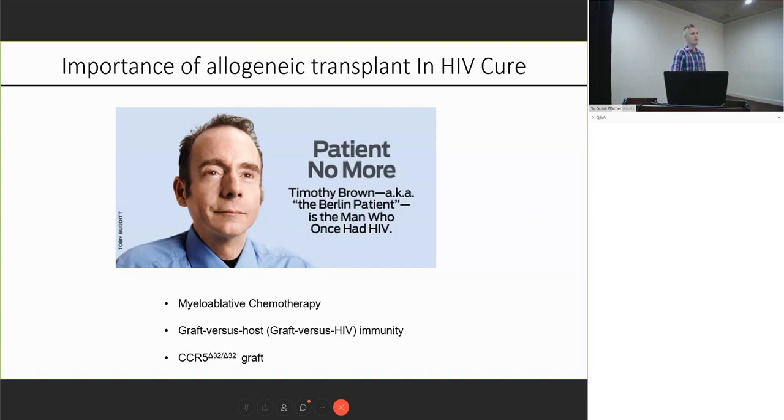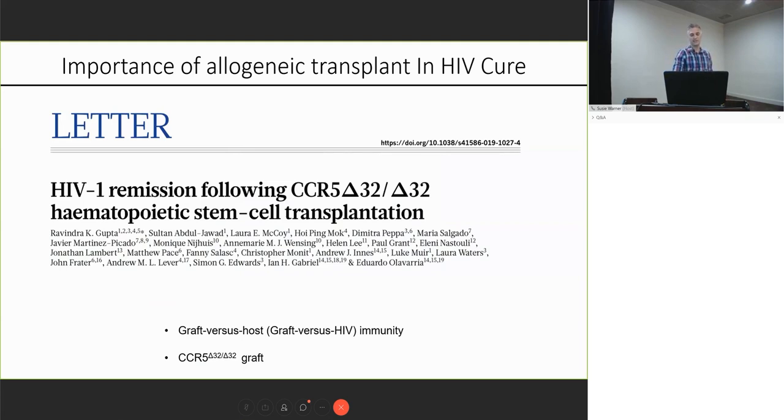We know through really elegant work from Guido Silvestri and Leslie Kean in the non-human primate model that it was not the myeloablative chemotherapy. This was subsequently confirmed this year with the publication of the London patient, and so it really shows us that it is either this allogeneic effect or the CCR5-deficient graft or some combination of the two.